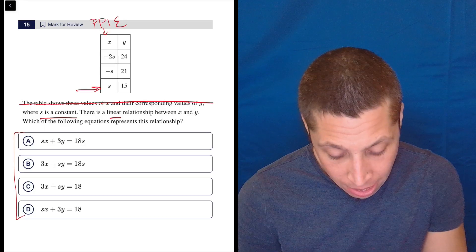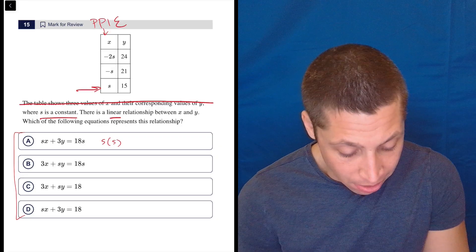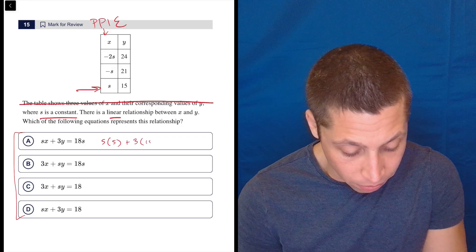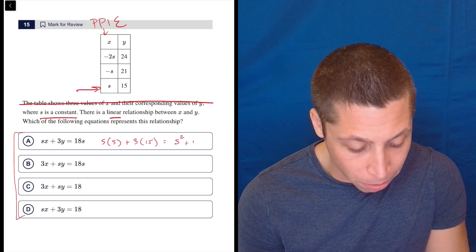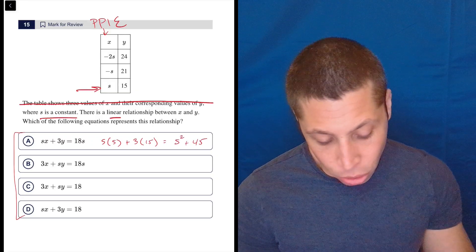If I put it in a, I would have s times s plus three times 15. And that's supposed to equal 18s, but that equals s squared plus 45. That's too weird. So, that's something's wrong there.